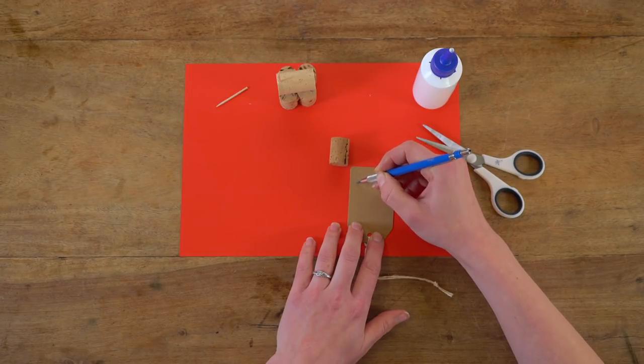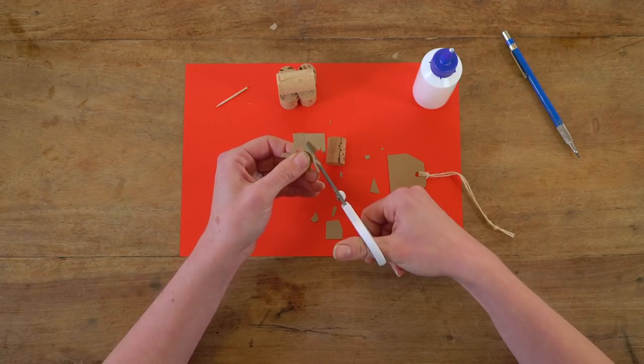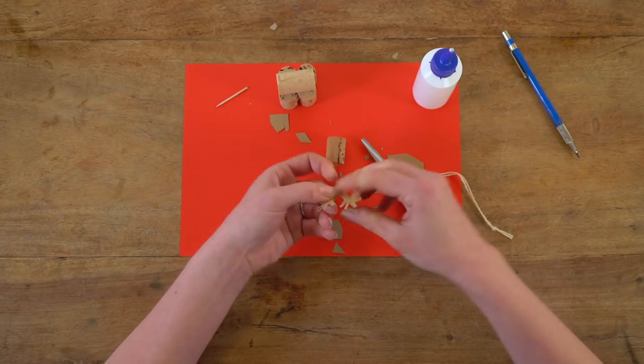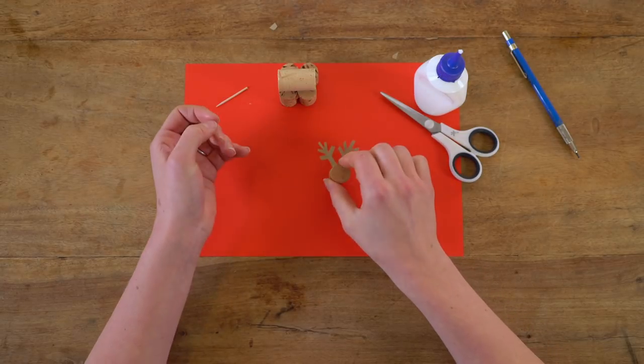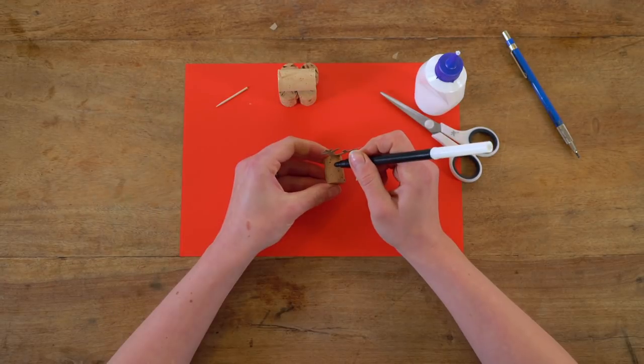Then create a set of antlers with any scrap paper you have. We're using an old Christmas gift tag. Cut the antlers out and glue them to the back of a cork for the head. Let the glue set and draw some eyes on your reindeer.